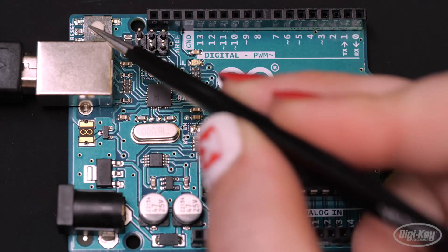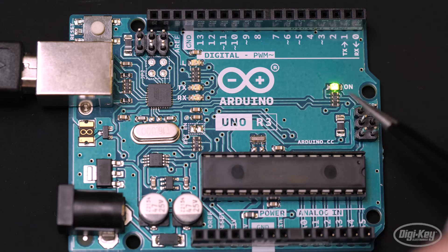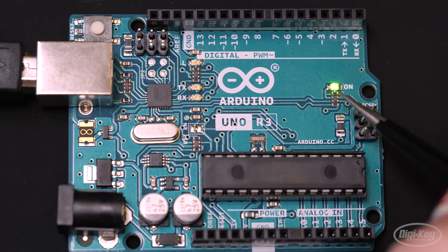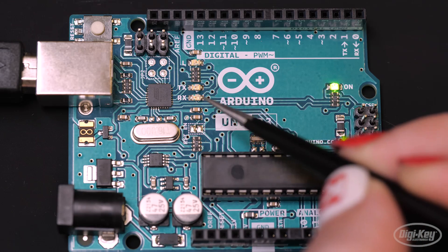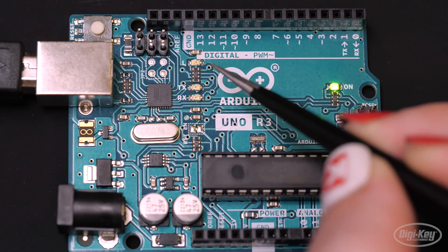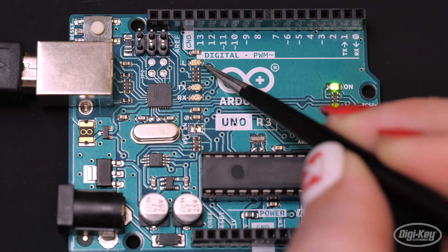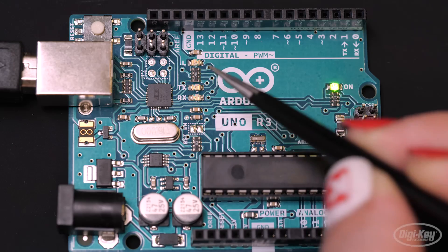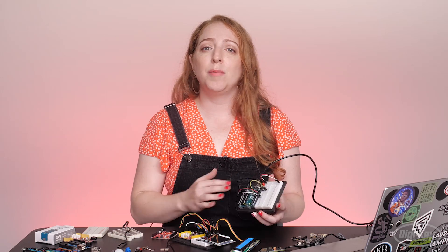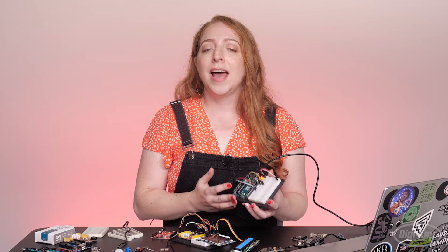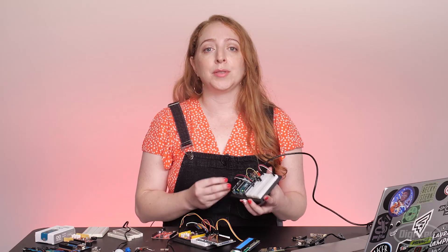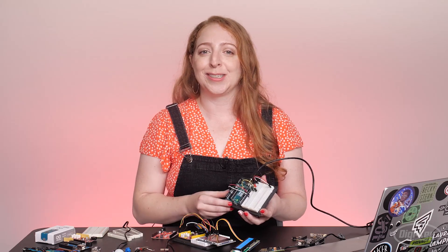On the board you'll also find a reset button, a power indicator LED, some LEDs to indicate when the board is sending and receiving data, and an LED wired to pin 13 for testing without having to plug anything into the board. The other components support the microcontroller and make it easy to wire up and program circuits without a degree in electrical engineering.